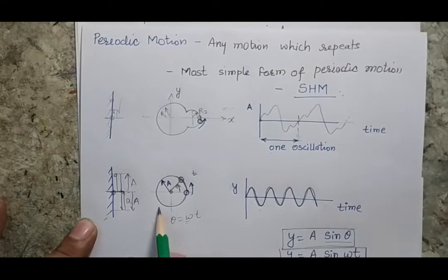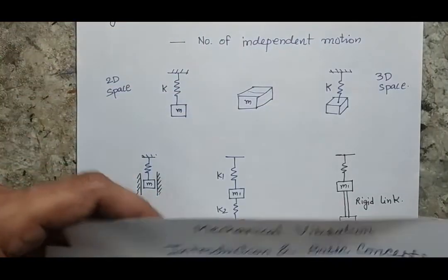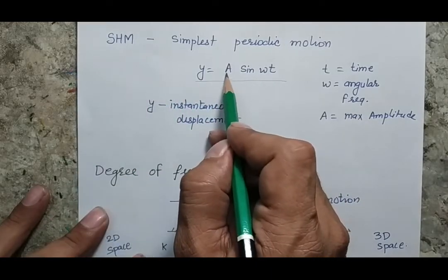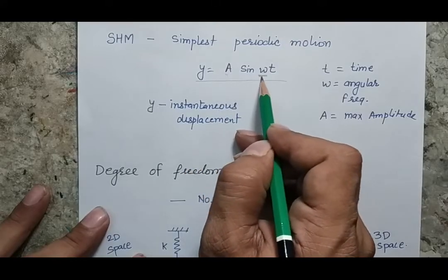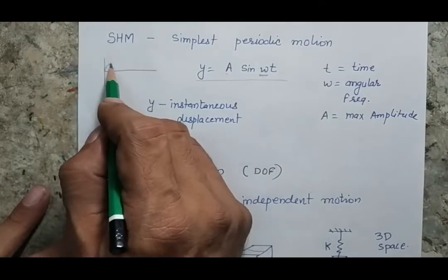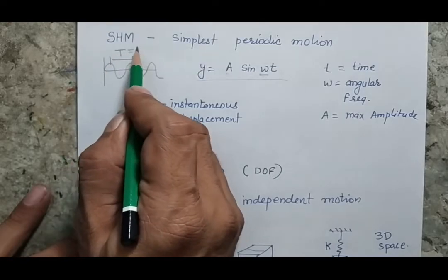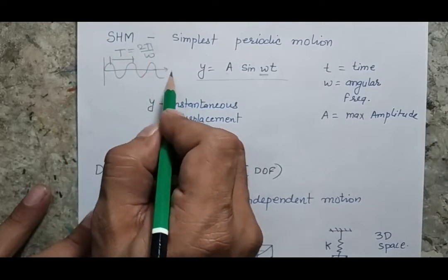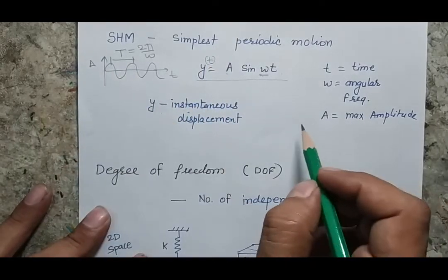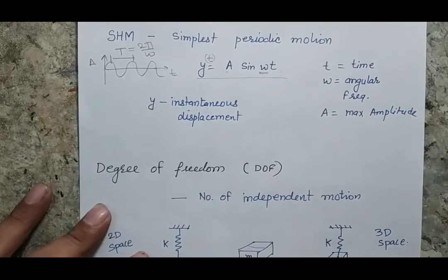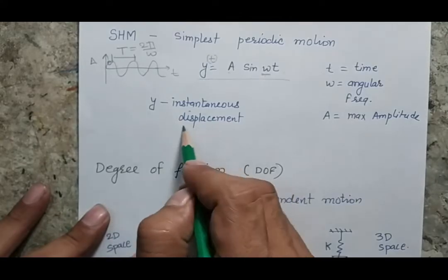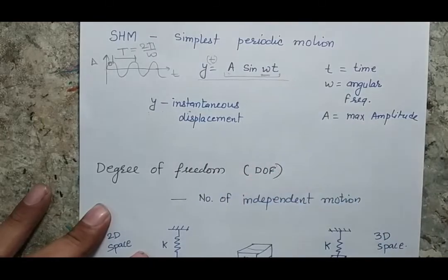In case of simple harmonic motion, the parameter A represents the amplitude — the maximum value of the deflection — omega is the angular frequency, and t is the time. The time period T equals 2π/omega, where y is plotted on the amplitude axis as a function of time. The instantaneous displacement y of the oscillatory system can be represented by the equation y = A·sin(omega·t).